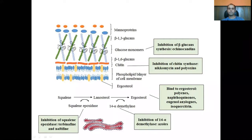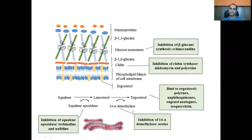There are drugs that bind to ergosterol itself, like the polyenes including amphotericin B. Then there are protein 14-alpha-demethylase inhibitors — the azoles — which are very much in use. There are also drugs that inhibit squalene epoxidase, like terbinafine and naftifine. Many drugs stop the biosynthesis of ergosterol: the azoles, the squalene epoxidase inhibitors, and drugs that directly bind to ergosterol and form pores, like amphotericin B.